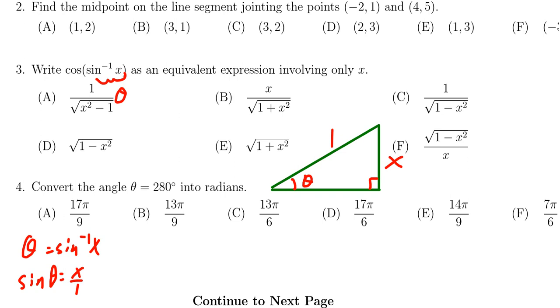Using the Pythagorean relationship, we can figure out the other side is going to be the square root of 1 minus X squared.